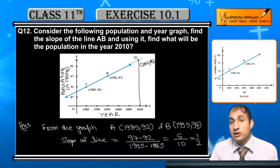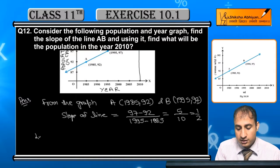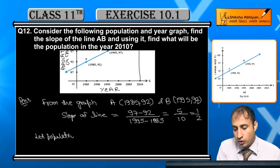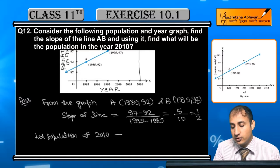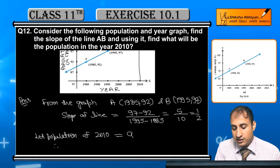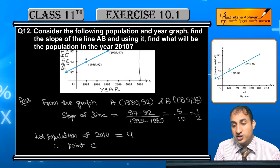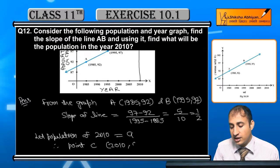Now, point C. What will be the population in 2010? Let the population of 2010 be equal to A. Therefore, point C's coordinates will be (2010, A).